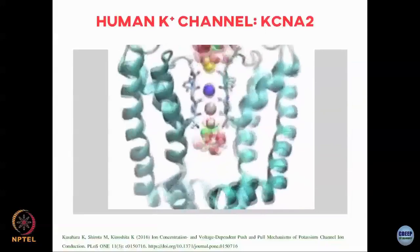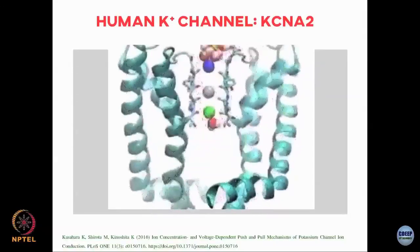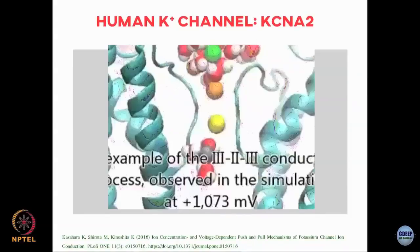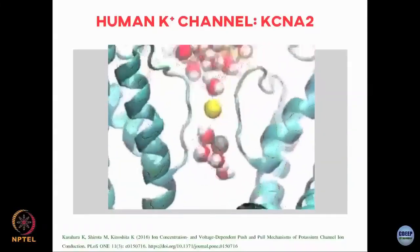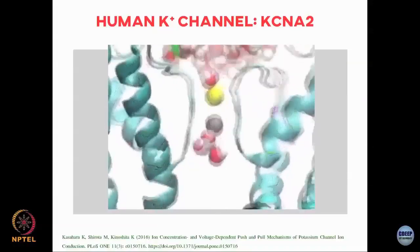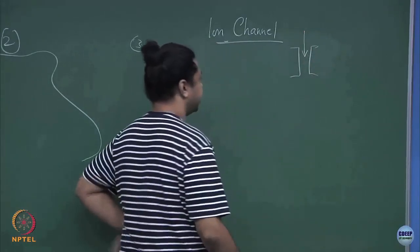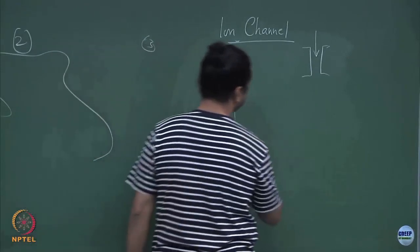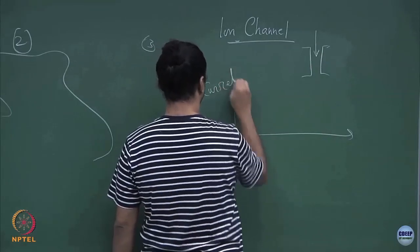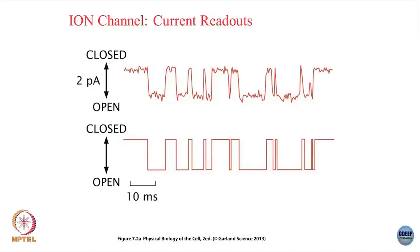Let us look at the ion channel example. If you think about the flux of ions or the current passing through this ion channel — here is an actual trace of an ion channel reading. When the ion channel is closed, no current is passing through. When it is open, you have some amount of current — in this case around 2 picoamperes — passing through the channel. That counts the flux of small ions passing through.